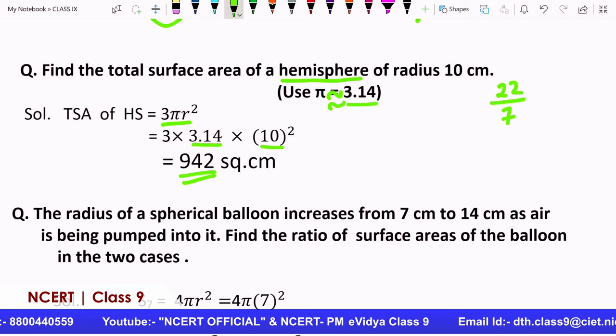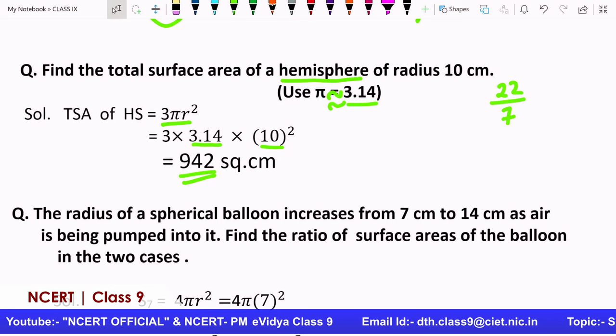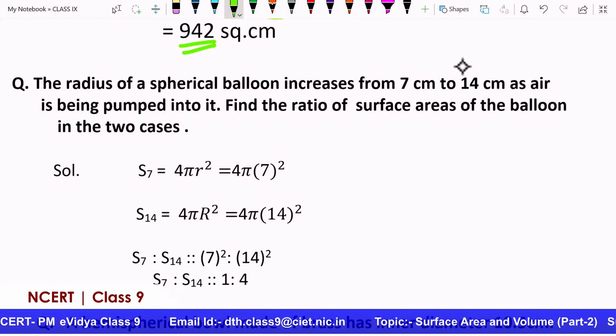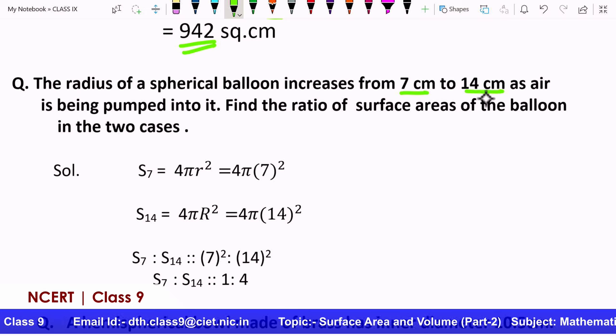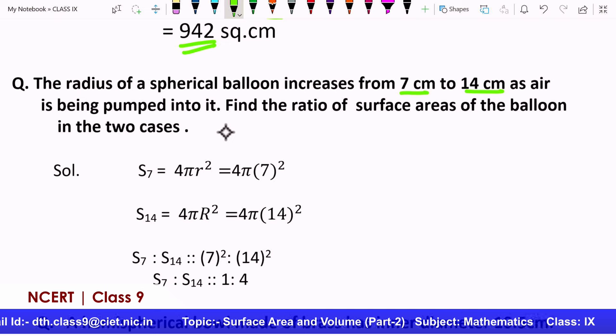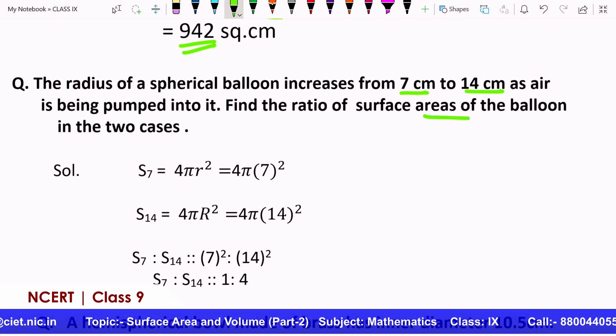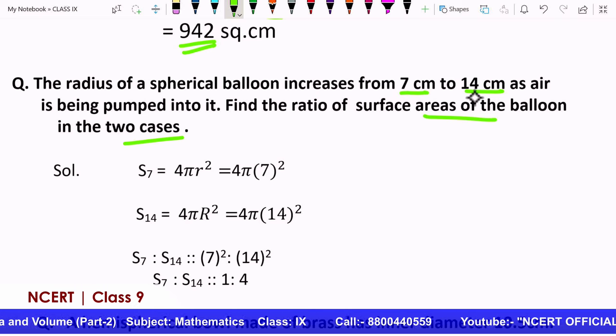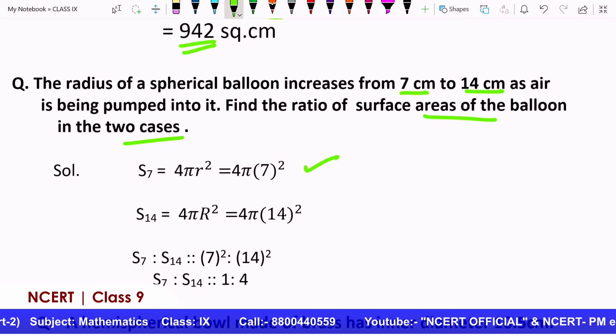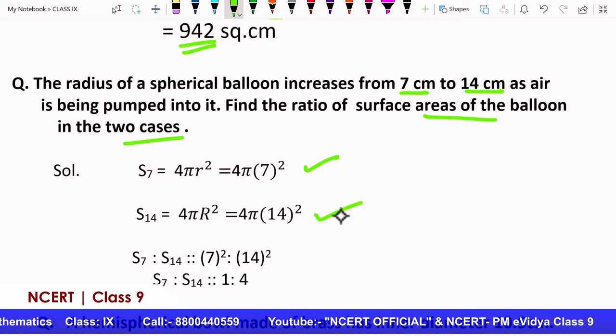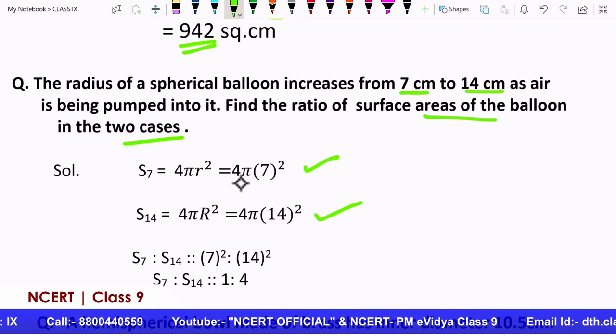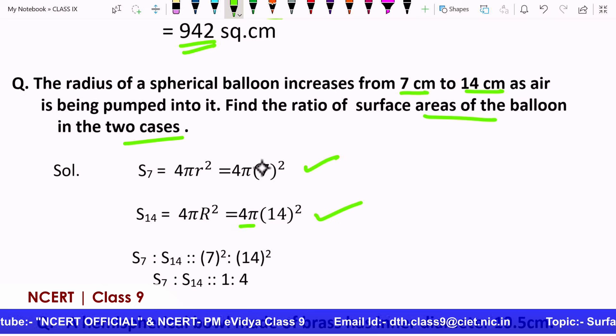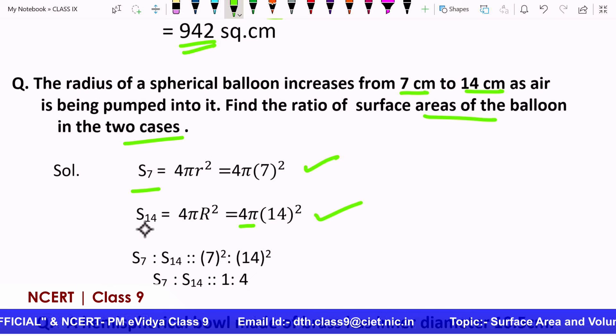Now, we have questions related to the formula. How do we have variety of questions? See this question. The radius of a spherical balloon increases from 7 centimeters to 14 centimeters. First it was 7 centimeters, then it changes to 14 centimeters as air is pumped into it. Now you have to find the ratio of the surface areas of the 2 cases. That is the first one's value will be 4π(7)², the second one 4π(14)².